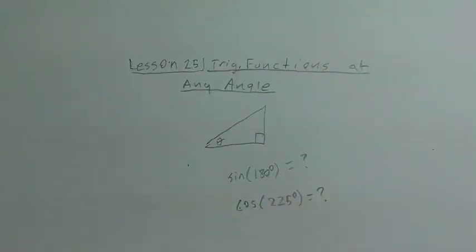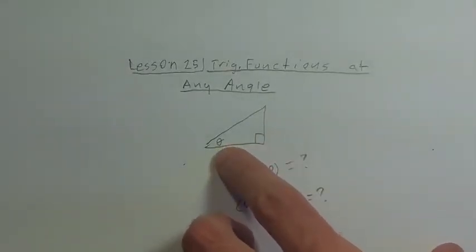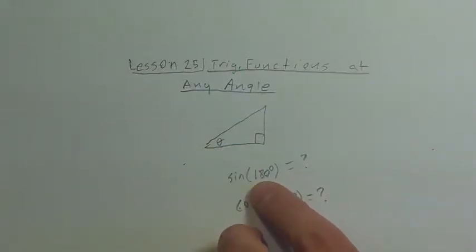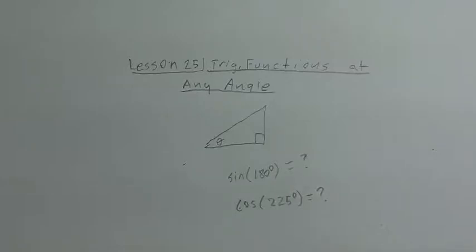It's not like we can actually set up a right triangle with those angles, because with theta in a right triangle, it has to be definitely less than 180 since all of the angles in the triangle sum to 180. So we can't actually use the right triangle definitions to do things like this. We need a further definition — we need to look at our trig functions at any angle to sort of expand this.